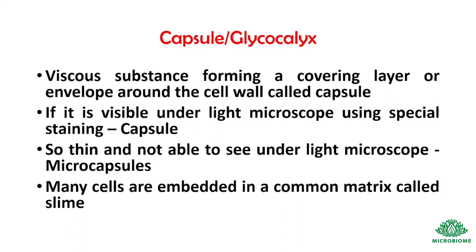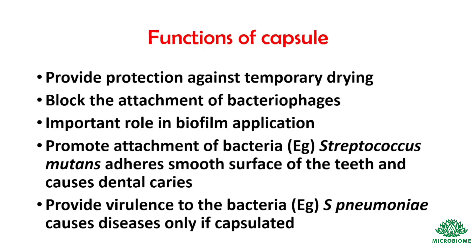Next, capsule and glycocalyx. A viscous substance forming a covering layer or envelope around the cell wall is called a capsule. If it is visible under a light microscope using special staining, it is called a capsule. If it is thin and not visible under a light microscope, it is called a microcapsule. When many cells are embedded in a common matrix, it is called slime. Functions of the capsule include: protection against temporary drying, blocking attachment of bacteriophages, an important role in biofilm formation, and promoting attachment of bacteria — for example, Streptococcus mutans adheres to the smooth surface of teeth and causes dental caries. It also provides virulence to bacteria; for example, Streptococcus pneumoniae causes disease only if it is encapsulated.